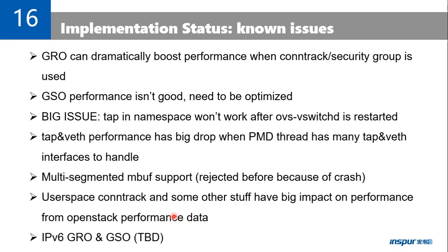From the OpenStack performance numbers, we can see we cannot reach line speed. We think we have some issues in the conntrack implementation and some other areas, so we need to optimize them. For IPv6 support, we need to develop GSO and GRO — I'm still working on this.